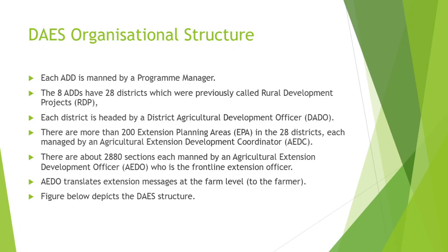There is a figure in your notes which depicts the DAES structure. The national headquarters at the topmost is managed by the director of extension services. The department has six programs: extension planning, extension systems and training, agricultural communication branch, agricultural gender roles, extension services, food and nutrition, as well as agri-business development and management. Each performs its own functions. From there, we have agriculture development divisions managed by development managers, demarcated based on agro-ecological characteristics.